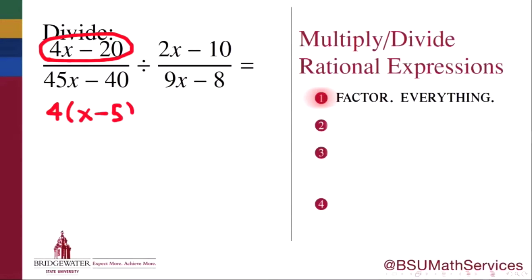4x minus 20 may be factored by bringing out its greatest common factor of 4 and leaving x minus 5. 45x minus 40, which is underneath it, has a greatest common factor of 5 that we can bring out, leaving the leftovers 9x minus 8. So now, our first rational expression, the dividend, has been completely factored in both its numerator and in its denominator.